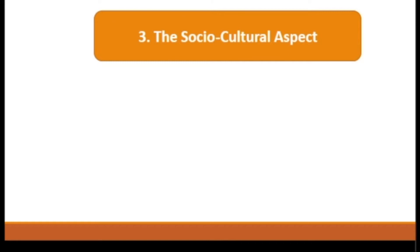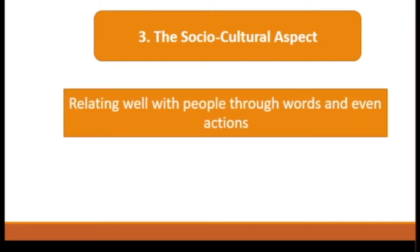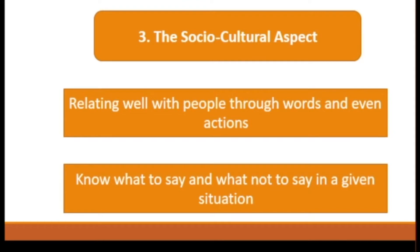The most important aspect of being competent at communication is the social aspect, meaning relating well with people through words and action. Part of growing up is to know what to say and what not to say in a given situation. As the world grows closer, there is an ever-growing need to become more sensitive to communicating with people from different cultural backgrounds. What may be acceptable in one culture may be impolite or offensive in another, and what may be polite in one culture may be awkward in another.